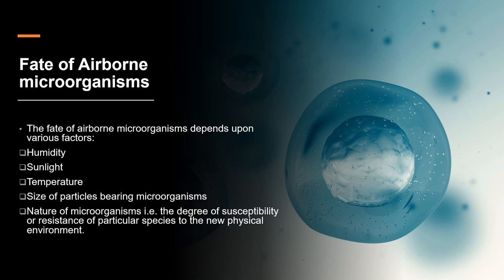First is humidity. Various microorganisms grow at a specific moisture level in the environment, but when humidity increases further it can kill the growth of various microorganisms. Sunlight, or specifically UV light, can have a killing effect on microorganisms by denaturing their proteins and DNA. Temperature — bacteria and various other microorganisms can grow at a constant temperature, but they cannot survive at extremes of temperature, and extremes of temperature would cause killing of the microorganisms.